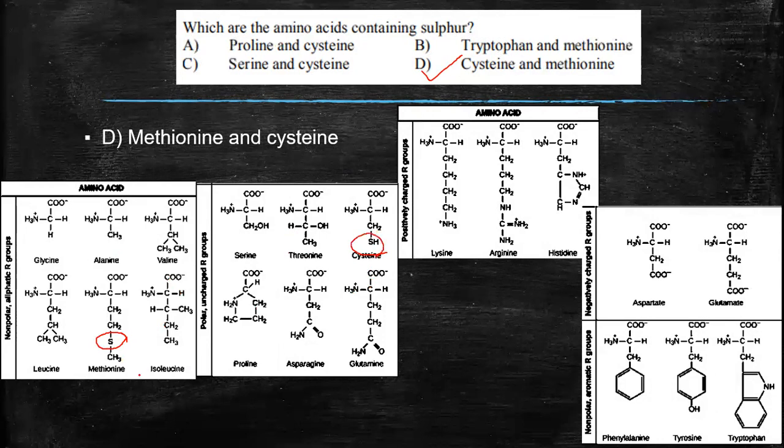For example, here you can see in cysteine and methionine. Then you need to know the positively charged ones, the negatively charged ones, very important. Then the ones with aromatic rings. These will be extremely important for you at an examination point of view because this is interesting to ask as a question.